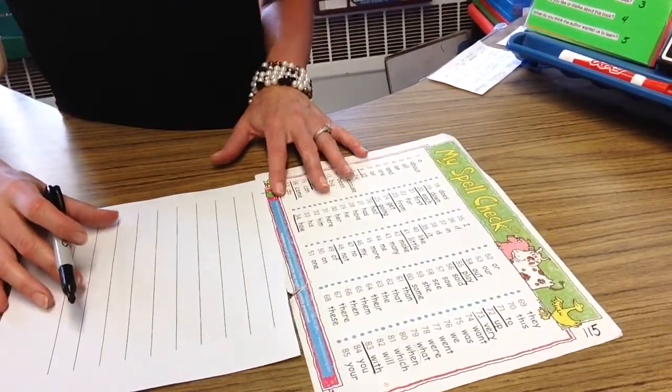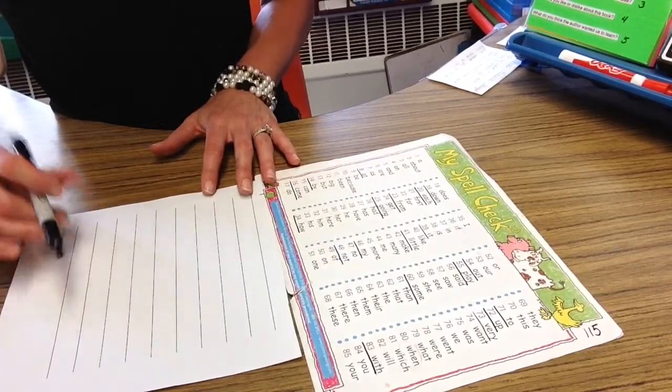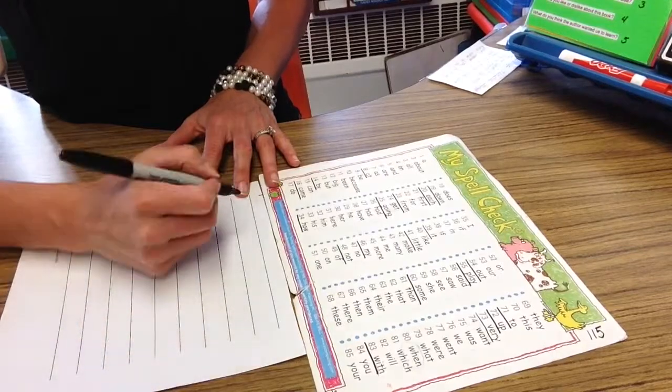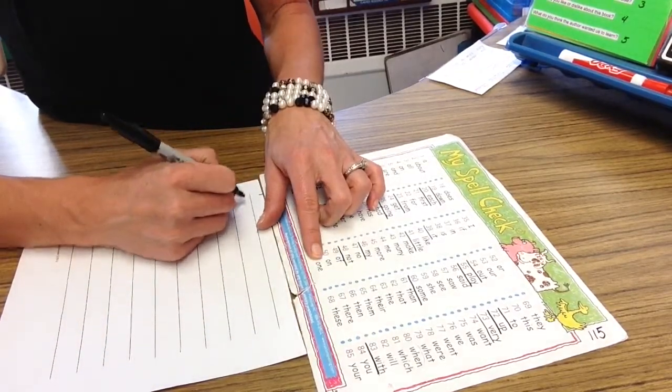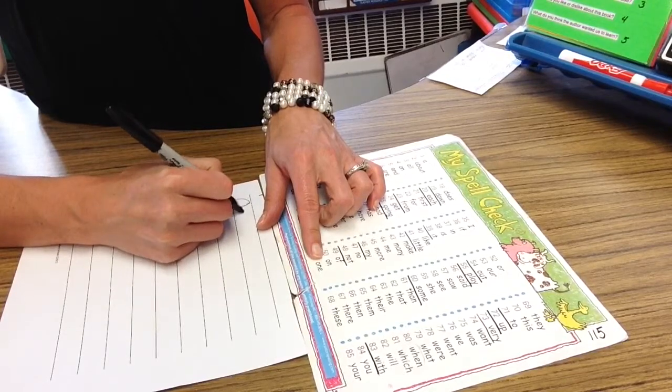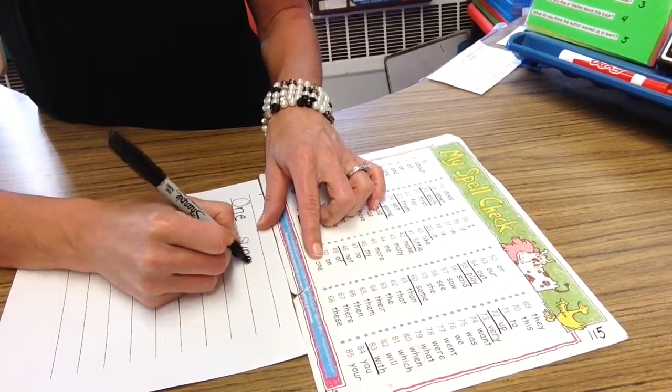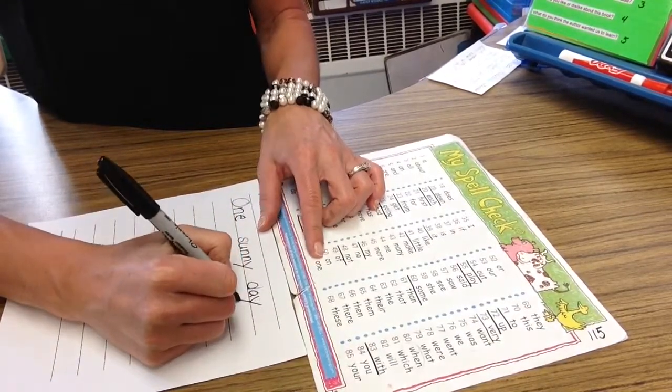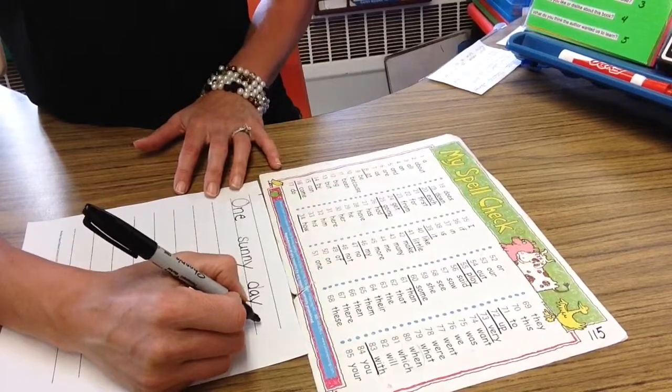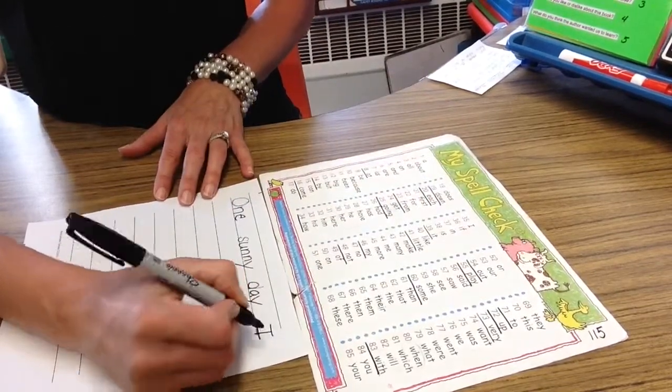I always make sure my word wall is right here so I can check if a word is a word wall word. I'm going to start with my setting, one sunny day. One, oh yes, that's a word wall word. So I look right here, O-N-E. Sunny I know is not a word on my word wall so I spell it the best I can and keep going. One sunny day, I. I is a word wall word so I remember that I have to spell it like this.